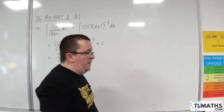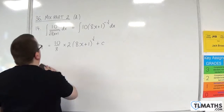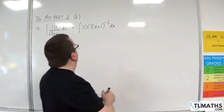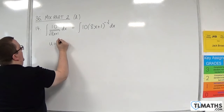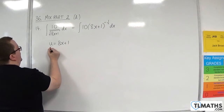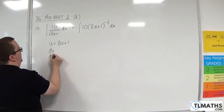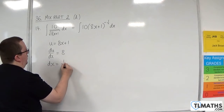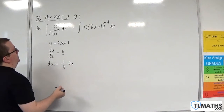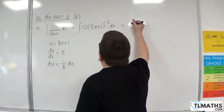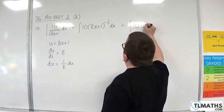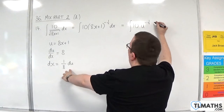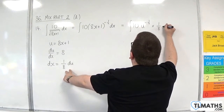Now, if you're going to do it by substitution, let u be 8x plus 1. So du by dx is equal to 8. Rearranging that to get dx, we get one eighth du. So this is going to be equal to the integral of 10u to the minus one half, and the dx is one eighth du.